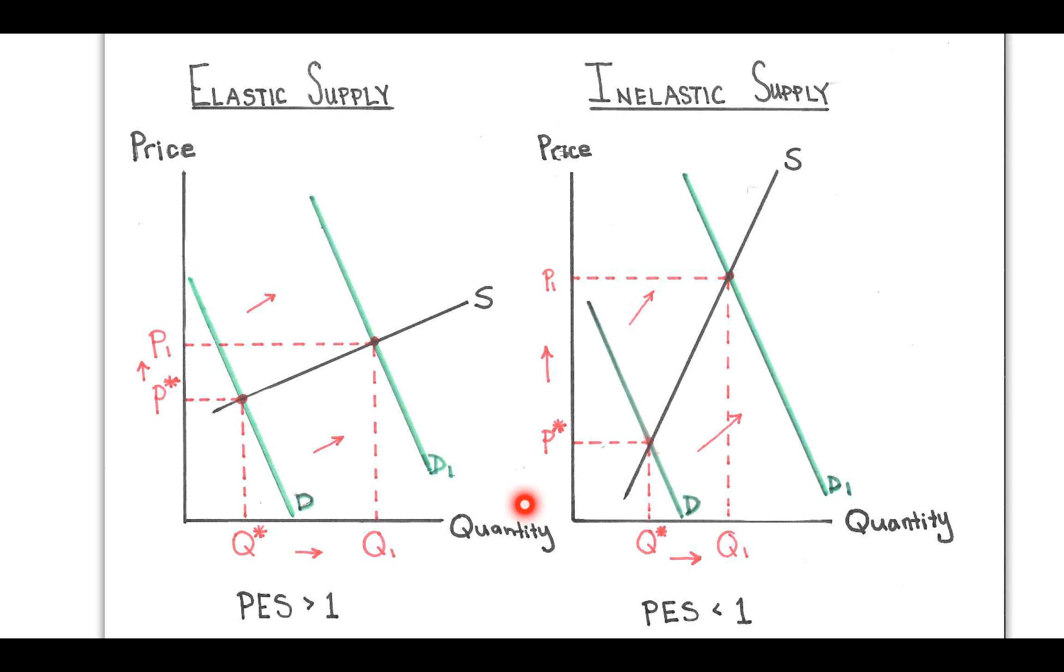Whenever you're taking a look at these two graphs, it's important that you do a couple of things. Your starting point should always be to lay down your price and quantity axes on Y and X, put in your supply curve and pay attention to the problem whether it's asking you for elastic or inelastic supply. Then draw on your demand curve and set P star and Q star.